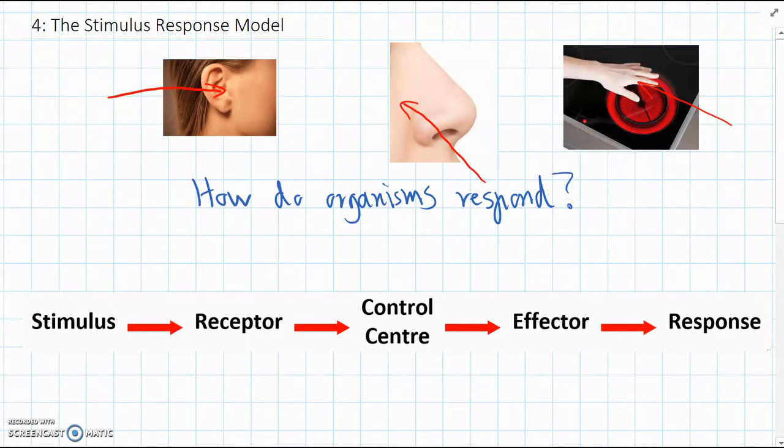So once a stimulus has been detected, how does an organism decide to do something about it? And what we're going to use to explain it is something called the stimulus response model.